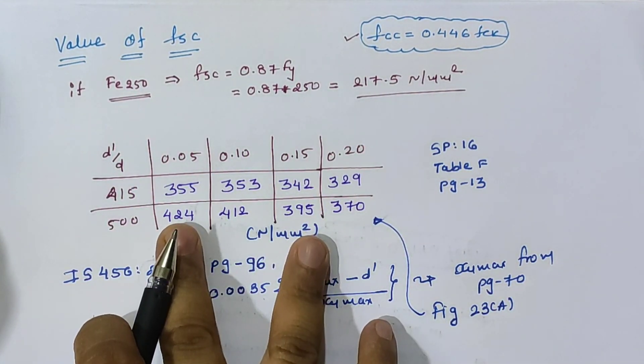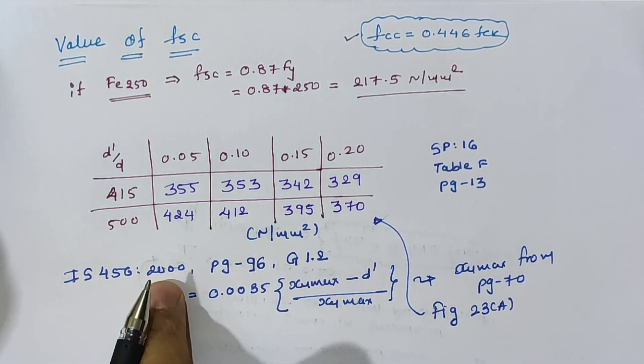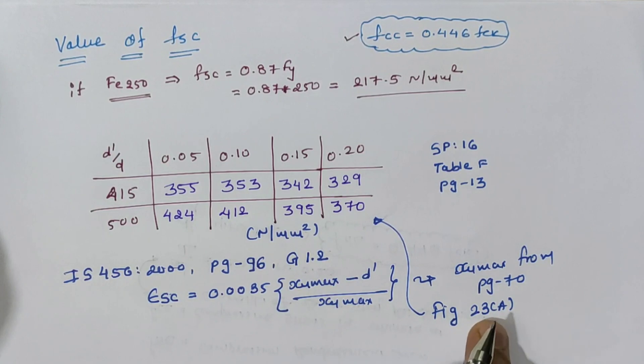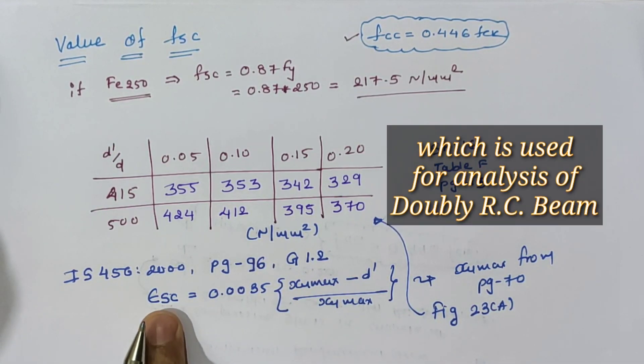From figure 23A, the value of fsc is derived in tabular form. This tabular form is used from IS 456:2000 using the equation of strain and figure 23A after calculation of xu max, d', and Esc value.